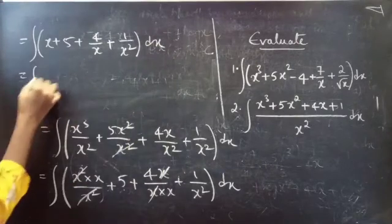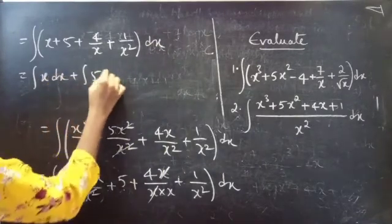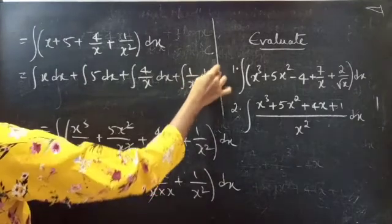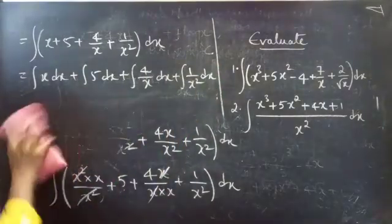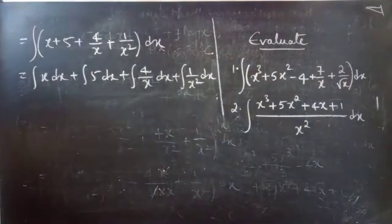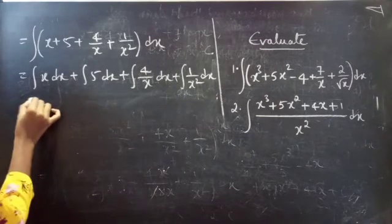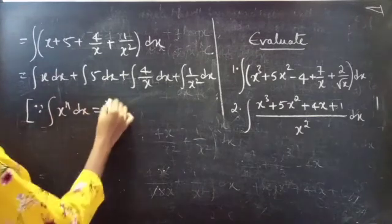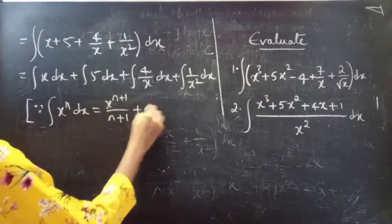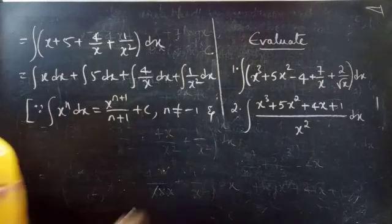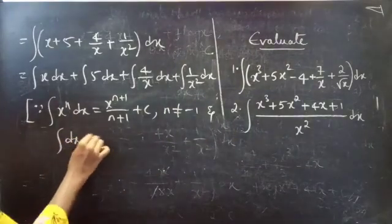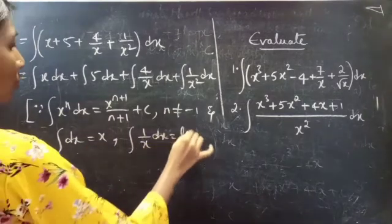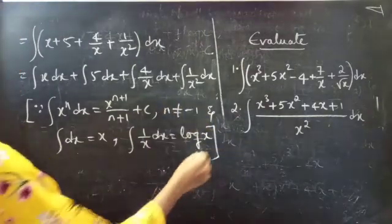So this equals integral of x plus 5 plus 4 by x plus 1 by x squared, into dx. We can write it as integral x dx plus integral 5 dx plus integral 4 by x dx plus integral 1 by x squared dx. Here we will be using the formula integral x power n dx, and also integral 1 by x dx equals log x.